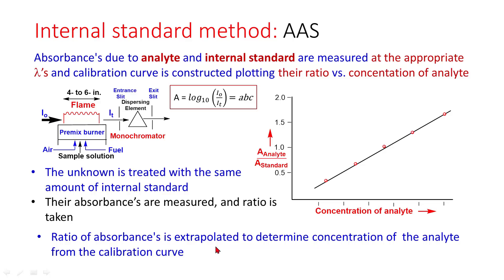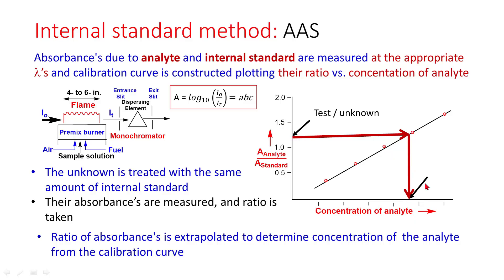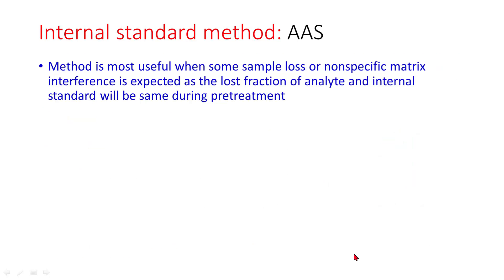The ratio of absorbances is extrapolated to determine concentration of the analyte from the calibration curve. This is the ratio of absorbance of analyte to absorbance of standard for the test sample. This is extrapolated to know the concentration of unknown. The internal standard method is most useful when sample loss or non-specific matrix interference is expected, as the lost fraction of analyte and internal standard will be the same during pre-treatment.